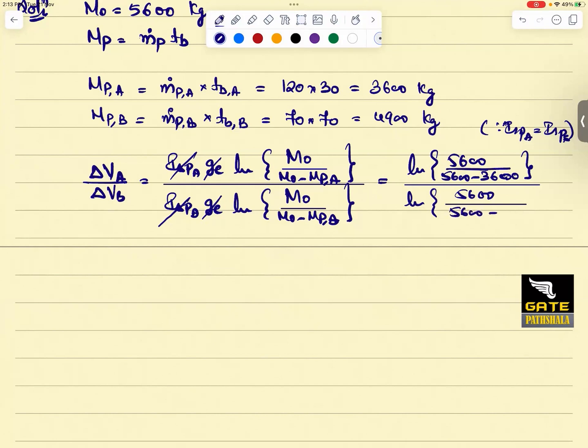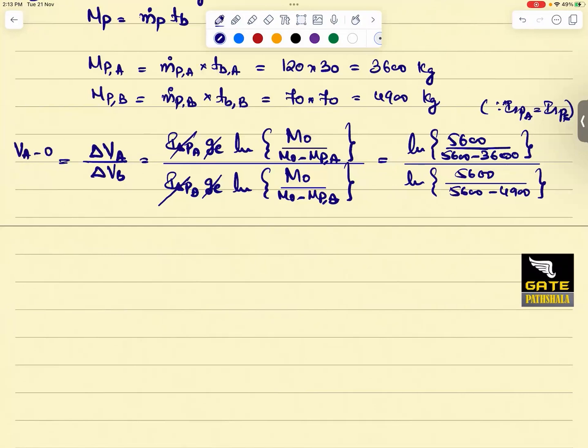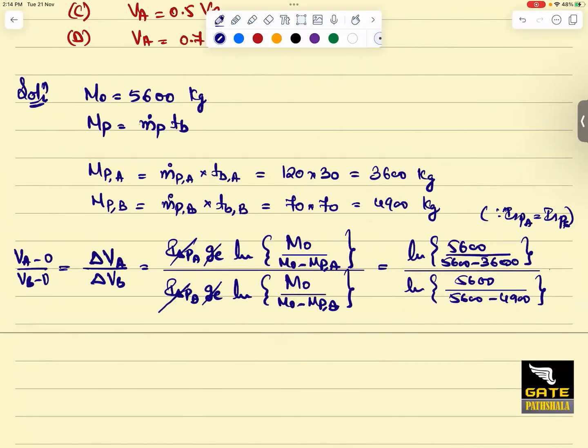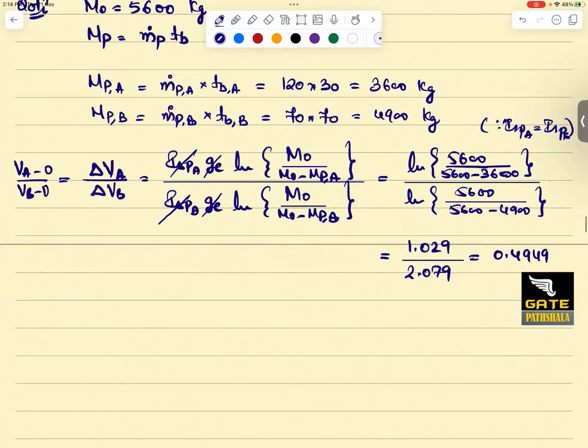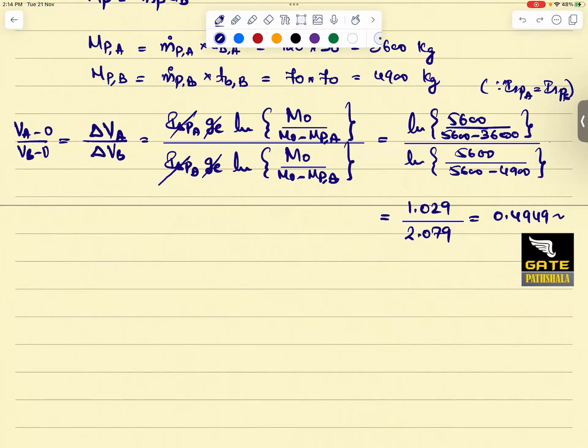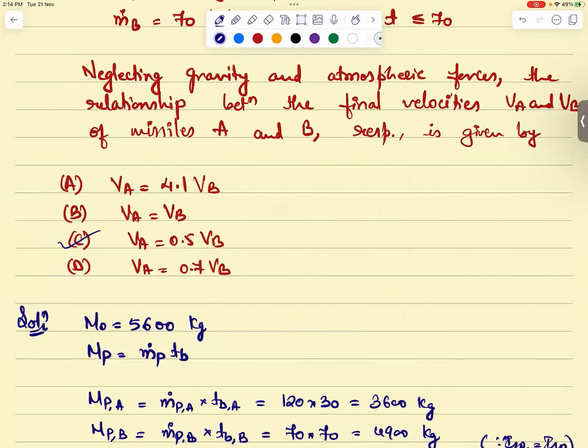So now what is delta V of A by delta V of B? Delta V is ISP of A times g ln of m₀ by m₀ minus mp of A divided by the same story with delta VB. That is equal to - and he is saying clearly both have the identical specific impulse, ISP A is equal to ISP B. Since ISP A equals ISP B, I am cutting that, g gone, and you just have to calculate this ratio. What values? This would become ln of 5600 by 5600 minus 3600. This is simply VA minus zero by VB minus zero, launch ho raha hai dono zero se. How much is this ratio? 0.4951, 0.4949. Check, 0.4949. Very good, so roughly the answer would be approximately 0.5 times of VB. Therefore VA is equal to approximately 0.5 times of VB. Answer should be C. Is it tough for you?